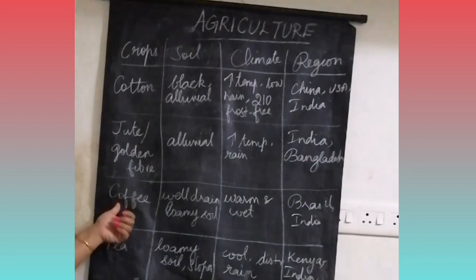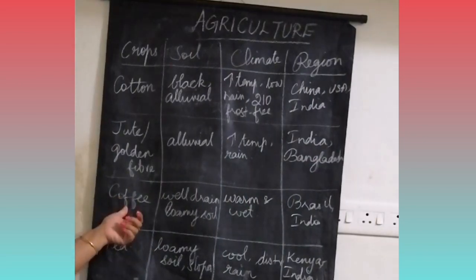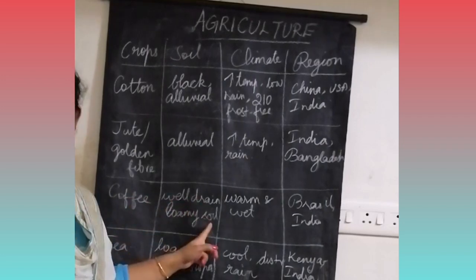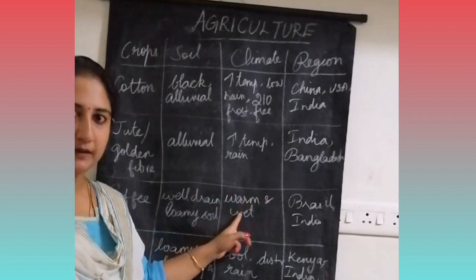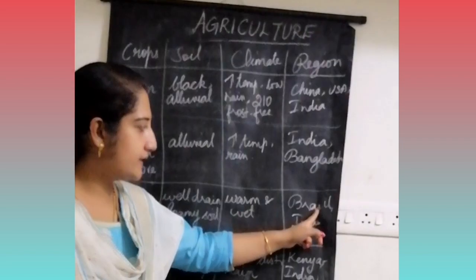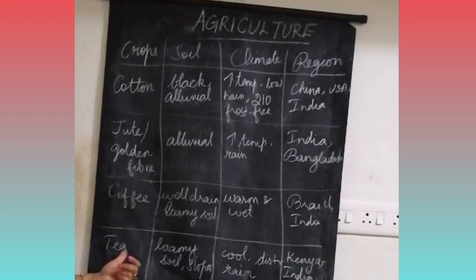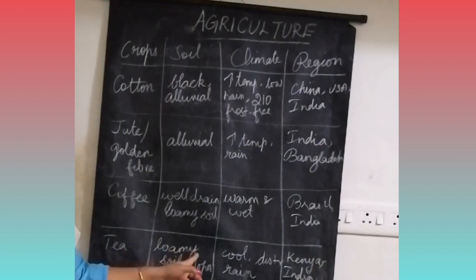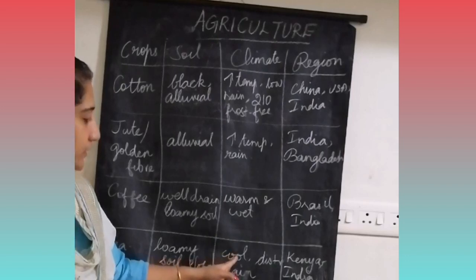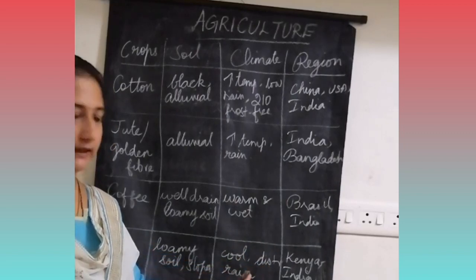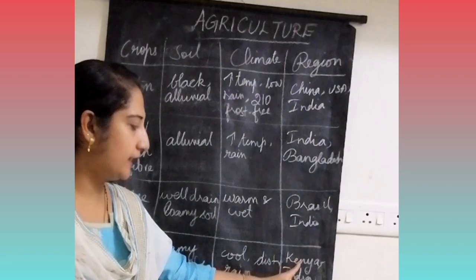The next two are beverage crops. The first one is coffee — it requires well-drained loamy soil, warm and wet climate, and is grown in Brazil and India. The last one is tea — it requires well-drained loamy soil with gentle slopes, cool climate with well-distributed rainfall throughout the year, and is grown in Kenya, India, and China.